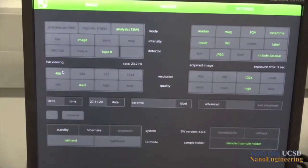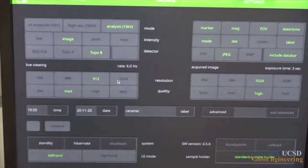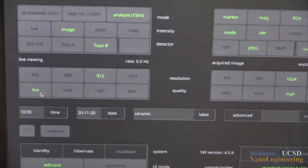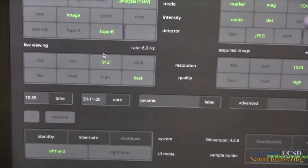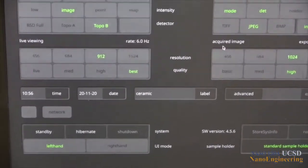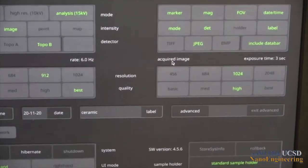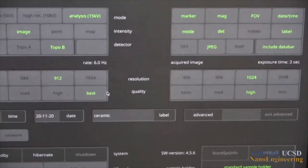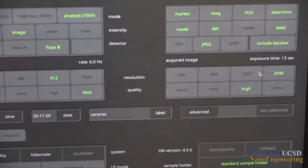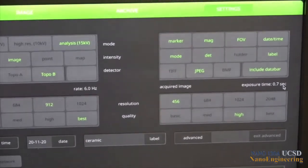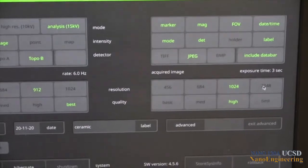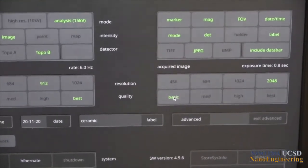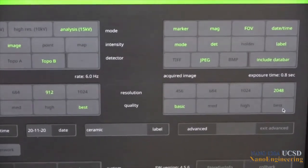The live viewing boxes have resolution and quality controls as shown here. You can set the resolution, the noise level, and response speed—that is the refresh rates for the image that appears on your viewing screen. Higher numbers typically result in slower rates of refresh and better image quality. Similar settings are available for the recorded image or the acquired image during picture taking. As noted here, higher values of resolution and quality result in longer exposure times as shown.